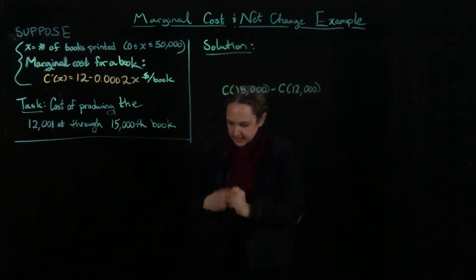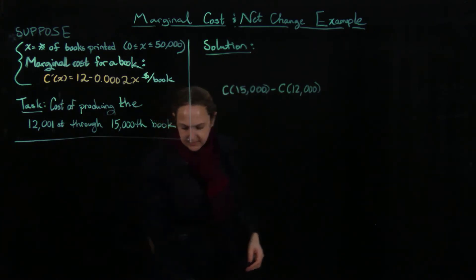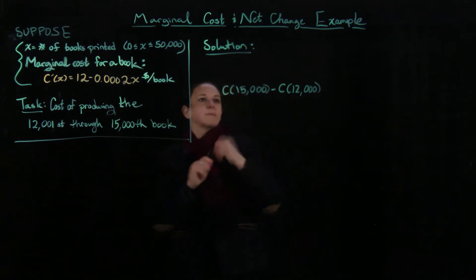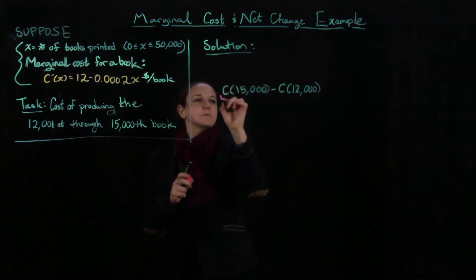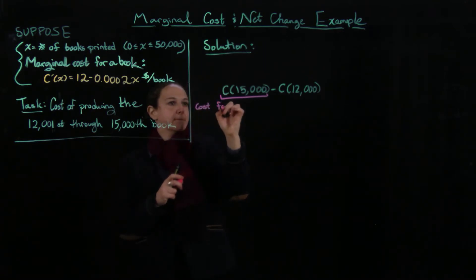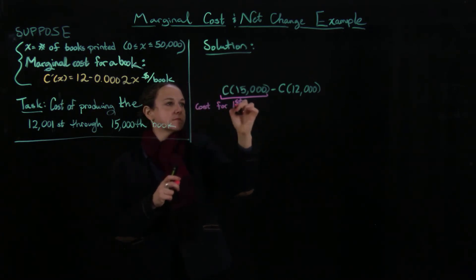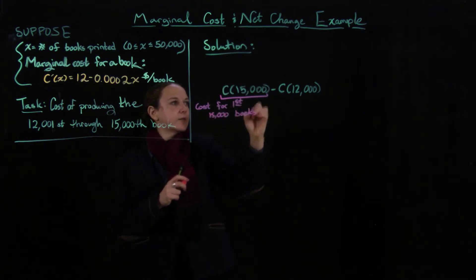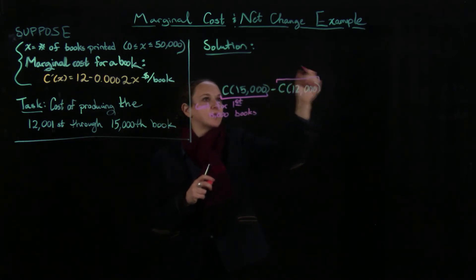So let's just kind of indicate that that's going on here. So this is the cost for the first 15,000 books. And this is the cost that we're getting rid of for the first 12,000 books.